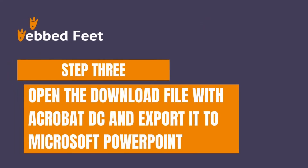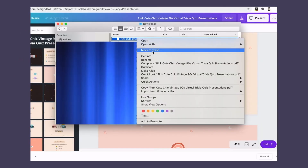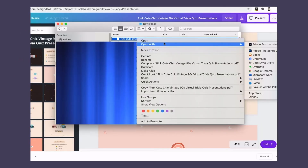Step 3: Open the downloaded file with Acrobat DC and export it to Microsoft PowerPoint.